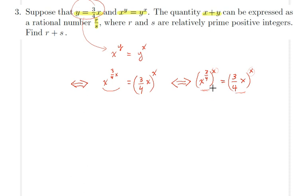From that I can conjecture that x^(3/4) is simply equal to plus or minus 3/4 x. Then I can do some cross product here.